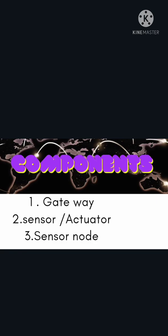Moving to the components of a wireless sensor network: we require a gateway, a sensor or actuator, and a sensor node. The gateway is very important and mandatory for any WSN, because it takes input from the sensor and sends it to the server side. So the three components required for WSN are: a gateway, sensor or actuator, and sensor node.